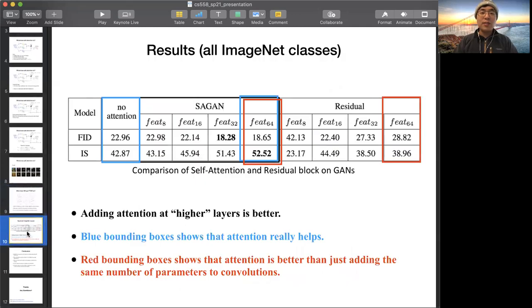Here, we want to show some results. This is the comparison of the self-attention and the residual blocks on GANs. Here presents three types of comparison. I use different colors to highlight that. The first shows that adding the attention at higher layer is better. I forgot to mention, in this paper, it applied two types of evaluation metrics.